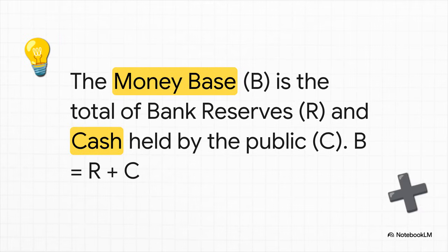Now let's connect a couple of those pieces. It's actually really simple. The entire money base, B, is just the sum of all the bank reserves, R, plus all the cash held by the public, C. That gives us our first key formula: B equals R plus C. Super simple, but super important. Remember that one, because we're about to use it right now.